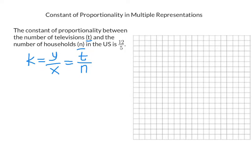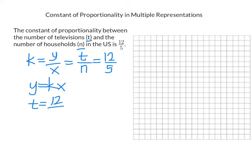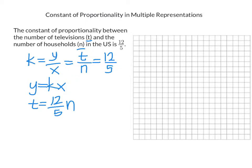Since the ratio is 12 to 5, we can write the equation in the form y equals kx, where t takes the place of y. So the equation is t equals 12 fifths n. This makes sense because multiplying the number of households by 12 fifths gives a larger number, meaning there are more televisions than households — which is logical since most households have more than one television.